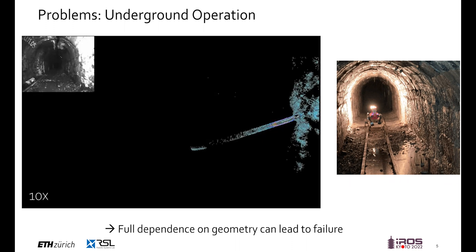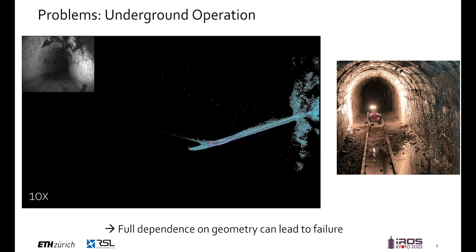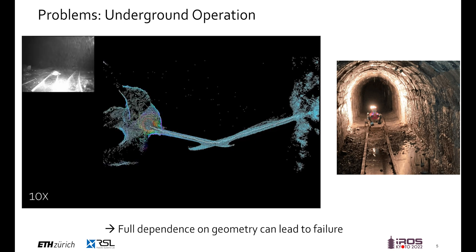Looking at the underground operation of our quadrupedal robot ANYmal, we can observe that the LiDAR geometry and mapping experiences larger issues in this environment due to the self-symmetry along the direction of the corridor. While the localization works reliably at the beginning and the end, the localization fails in the middle, leading to an entirely broken map.